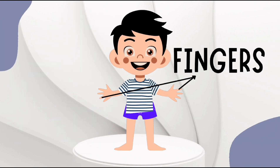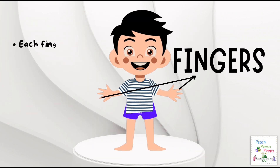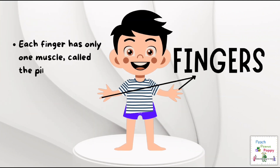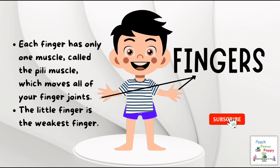Then we have the fingers. Each finger has only one muscle which moves all of your finger joints. The little finger is the weakest finger.